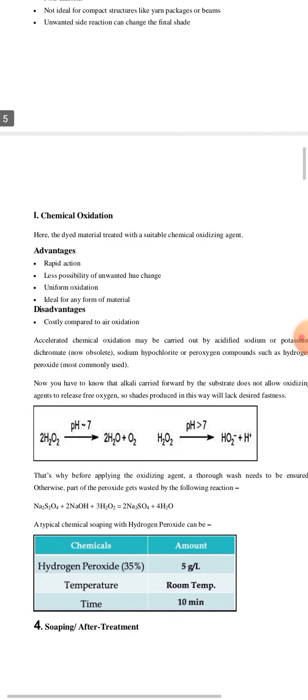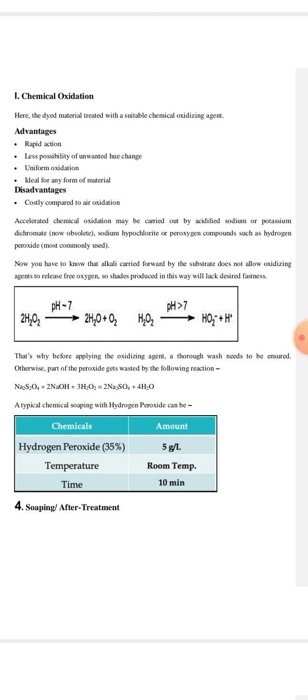Coming towards chemical oxidation, which is way better than air oxidation. In this, the dye material is treated with a chemical oxidizing agent, which may include sodium perborate, hydrogen peroxide, sodium hypochlorite, potassium dichromate, and so on. This process includes advantages like rapid action, less possibility of unwanted hue change, uniform oxidation, it is ideal for any form of material, and no side reactions occur in this type of oxidation. The disadvantage is that it is costly.